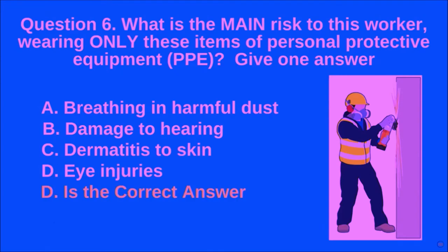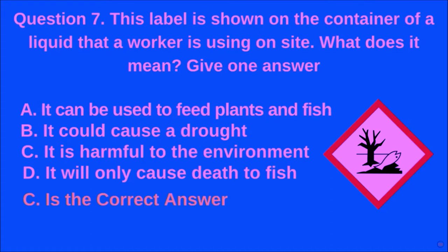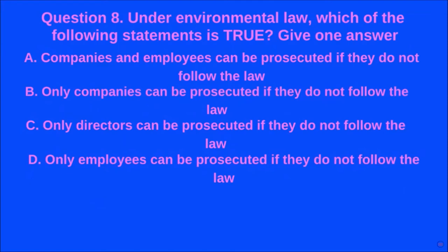Question 7: This label is shown on the container of a liquid that a worker is using on site. What does it mean? Give one answer. A: it can be used to feed plants and fish, B: it could cause a drought, C: it is harmful to the environment, D: it will only cause death to fish. C is the correct answer.